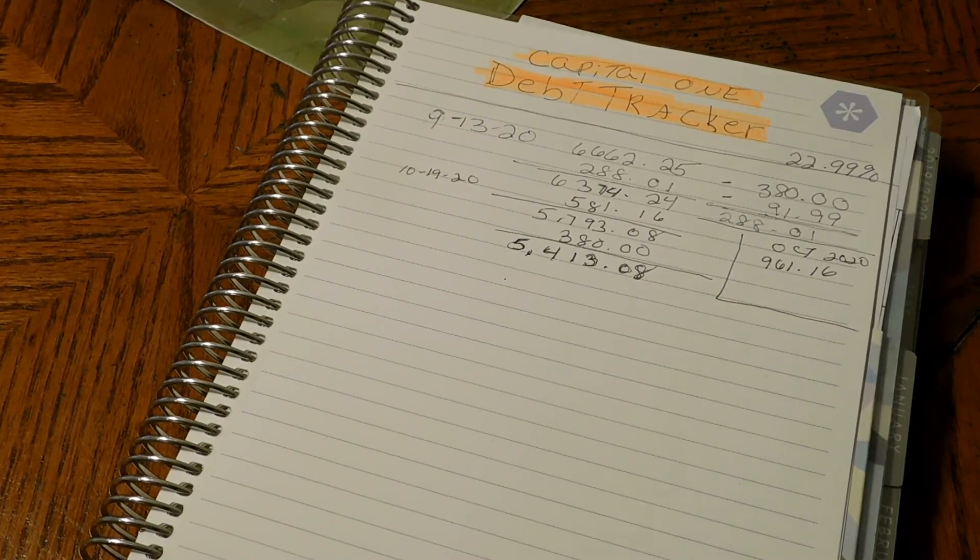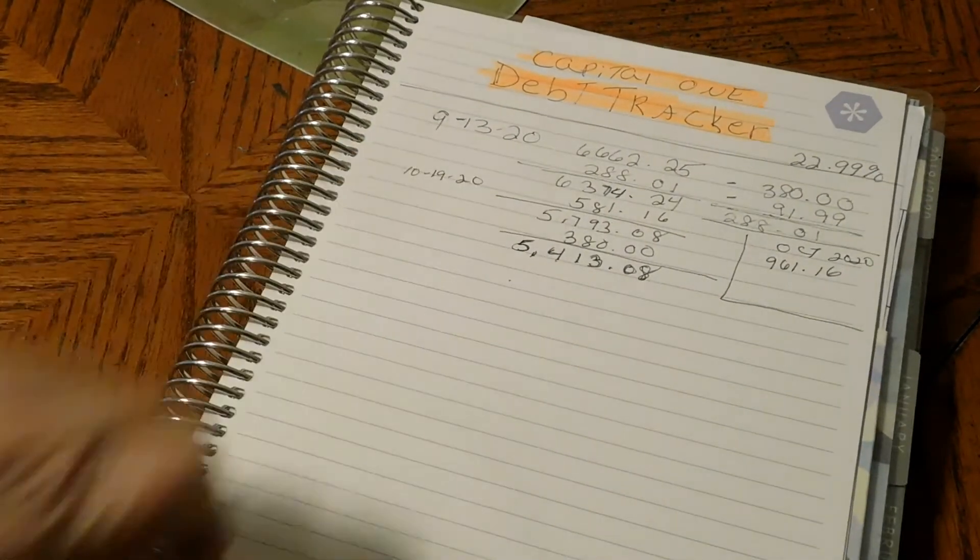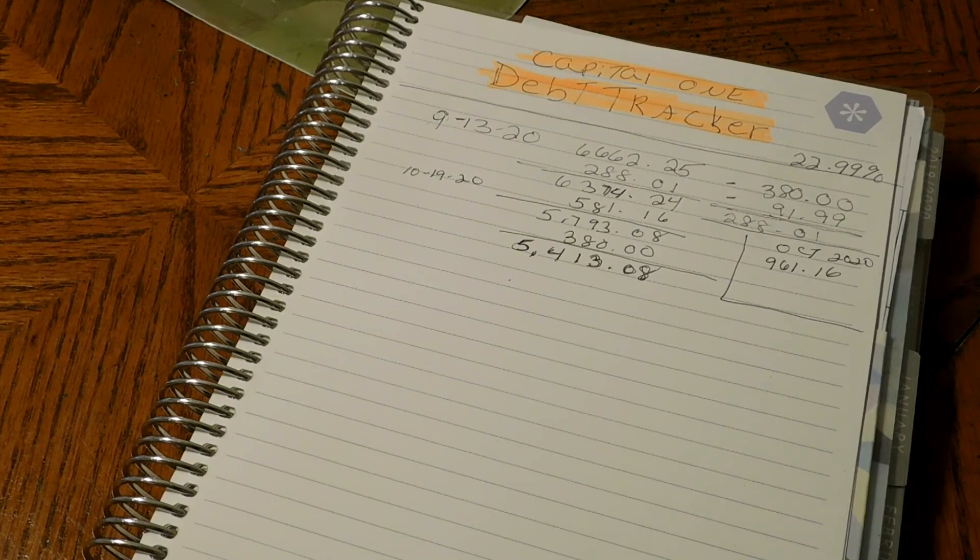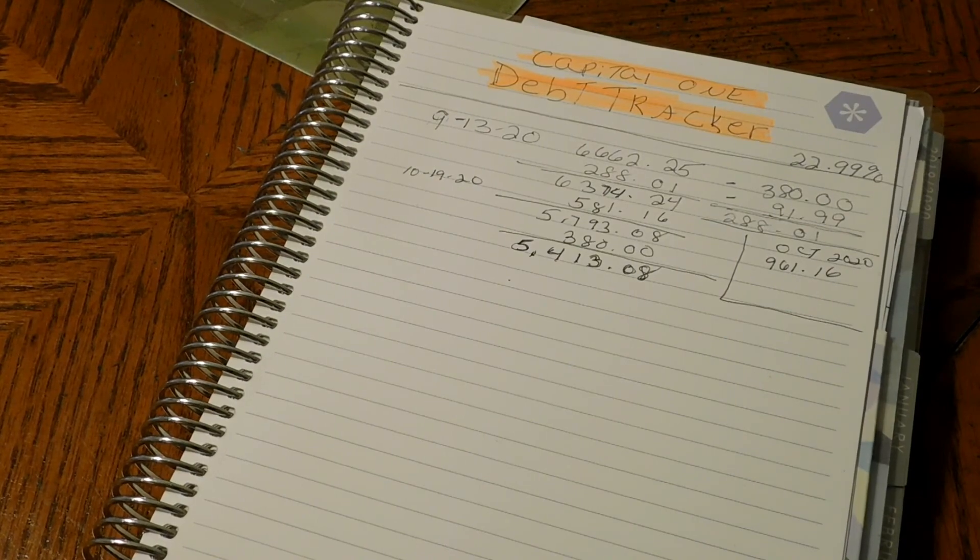But that's it, that's the update for Capital One. It's a short one, but we're getting there. We started at $6,662, we're down to $5,413. So I hope you enjoyed this video. If you did, please give it a like. If you're not subscribed, please consider subscribing. I would love to have you as part of my YouTube family. If you go out, please stay safe, stay healthy, and I will catch you guys in the next video. God bless, bye.